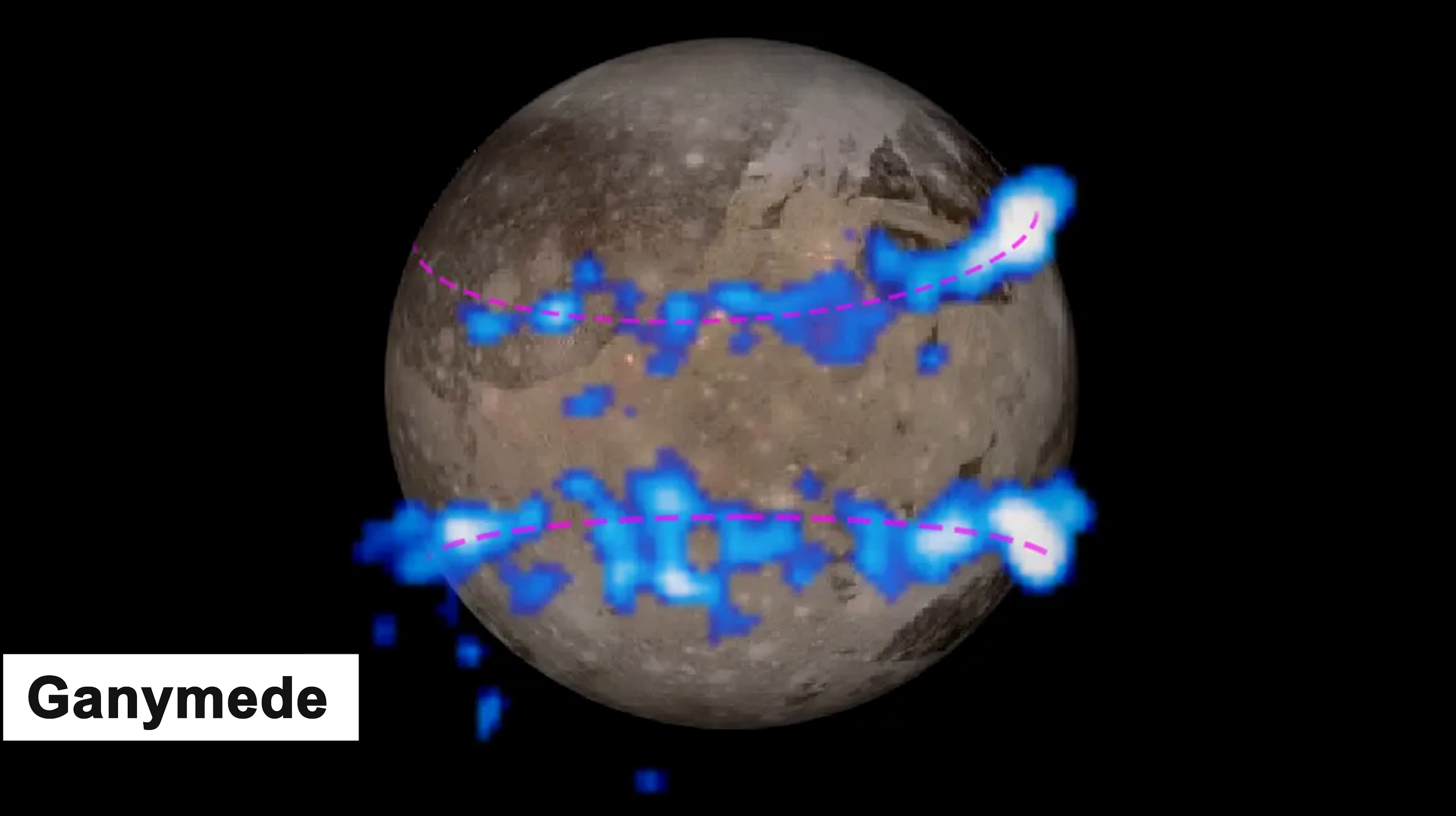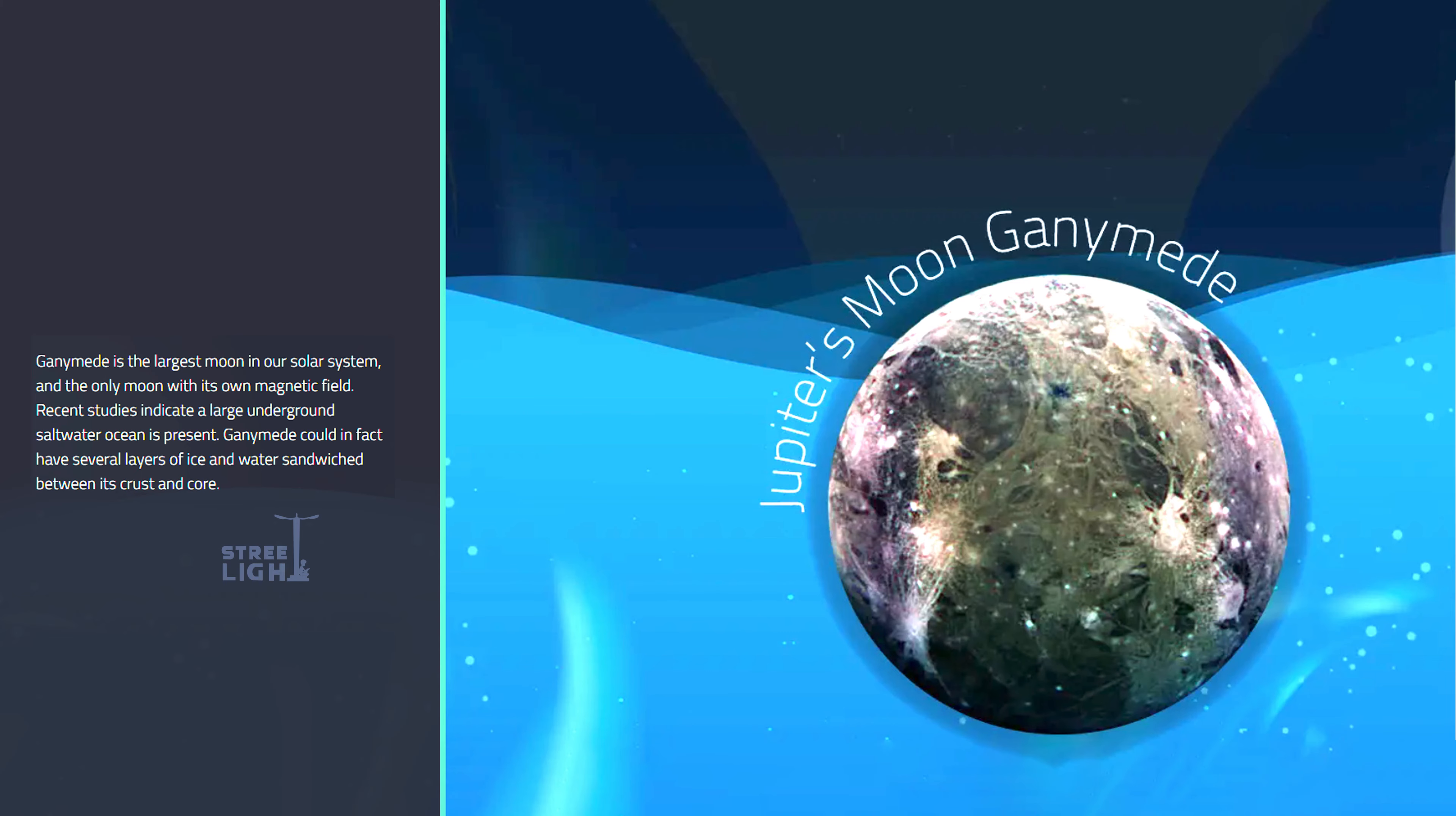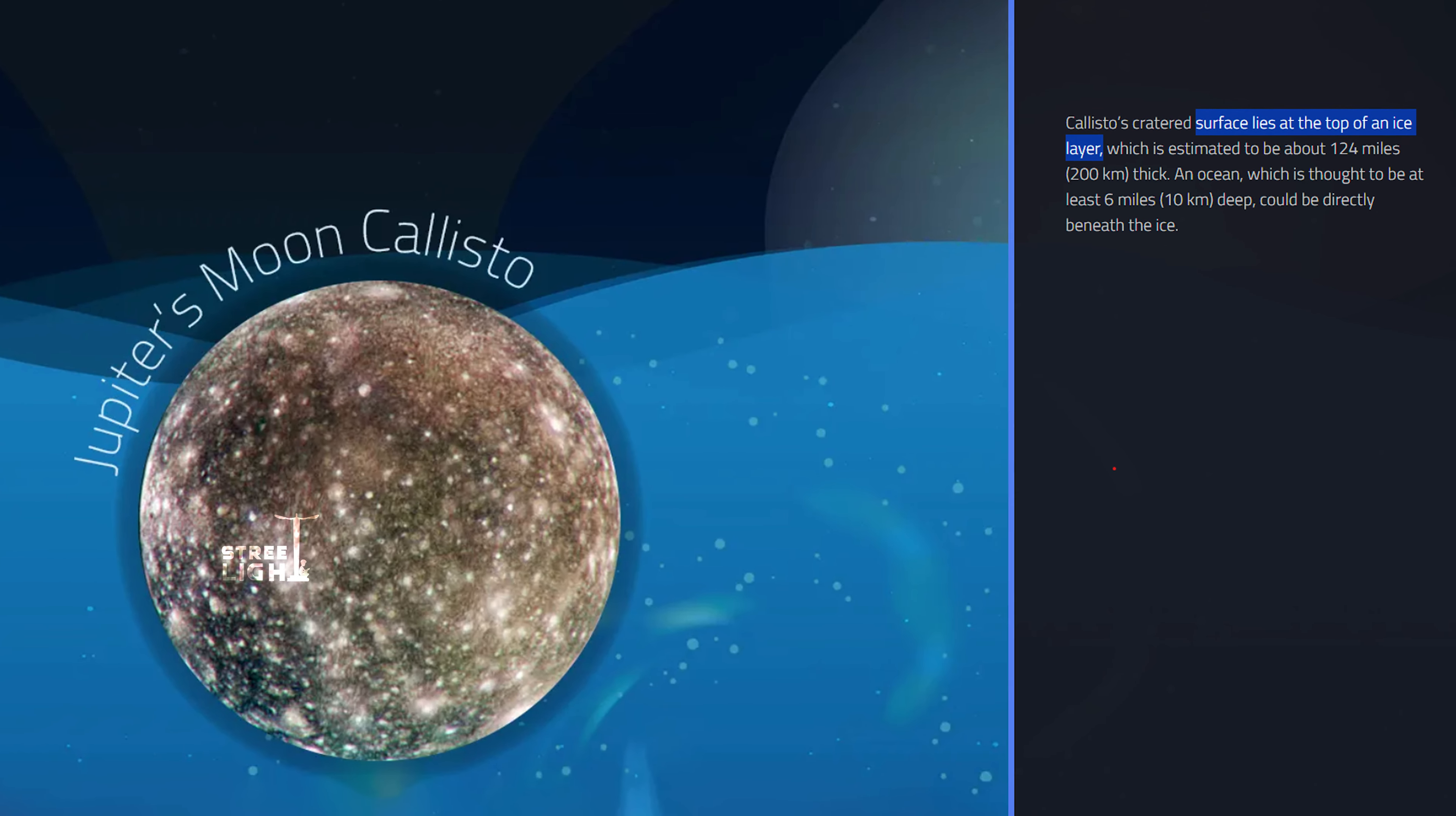Water is also found on Jupiter's moons. There is Europa with water ice, Ganymede with water ice, and Callisto with water ice as well.